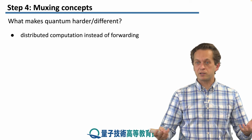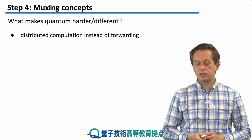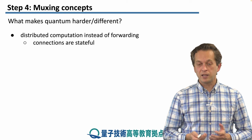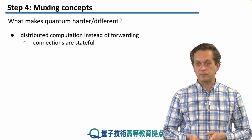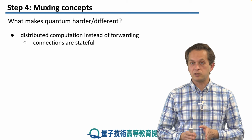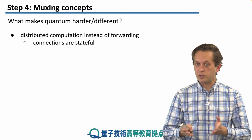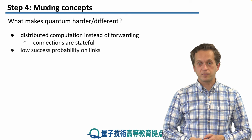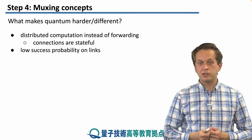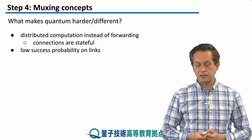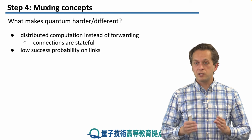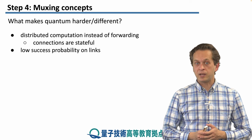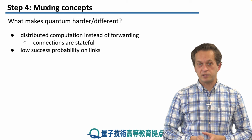Nodes are trying to purify their bell pairs, or they're trying to swap and create entanglement between longer distance nodes. That means the connections are stateful — each node must know the state of the connection, whether the qubit is connected with its neighbor or somebody else down the connection. Also, we have to deal with low success probability in links. Even in ideal conditions, interfering two photons at a BSA can happen with a maximum success probability of only 50%.